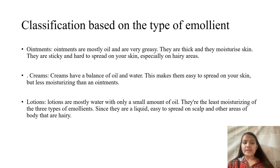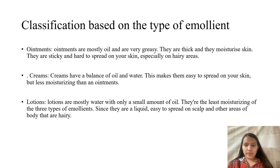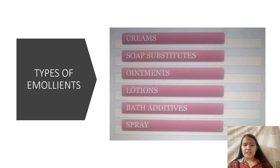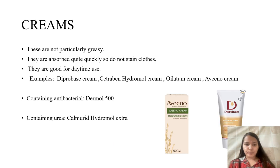Since ointments are very hard to spread on hairy areas, lotions — being liquid-based formulations — are easy to apply on hairy areas. Moving to a more detailed layout of types, emollients include creams, soap substitutes, ointments, lotions, bath additives, and sprays.